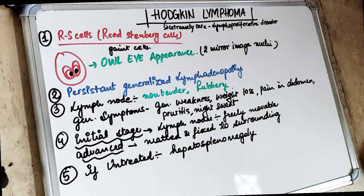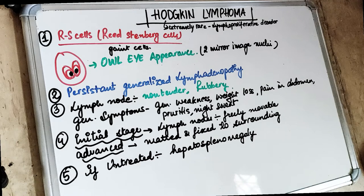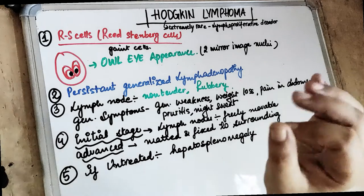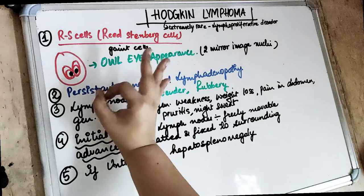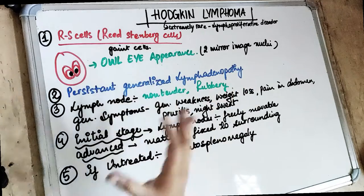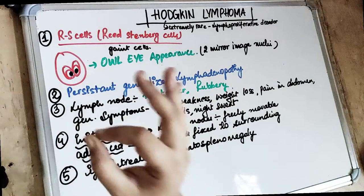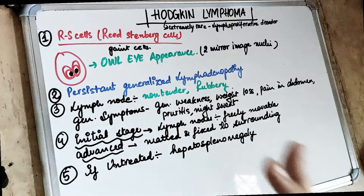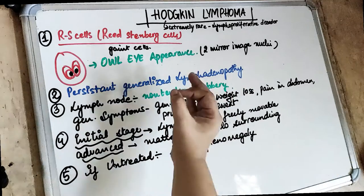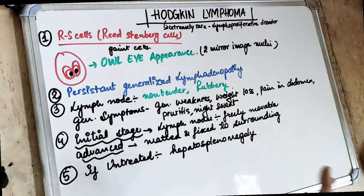Welcome back to another 5 in 5 series where we cover each topic under 5 headings in 5 minutes. Today's topic is Hodgkin lymphoma. This is an extremely rare lymphoproliferative disorder.